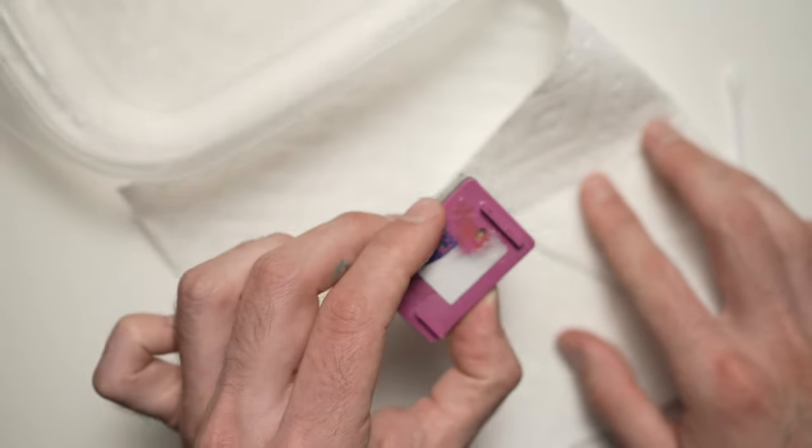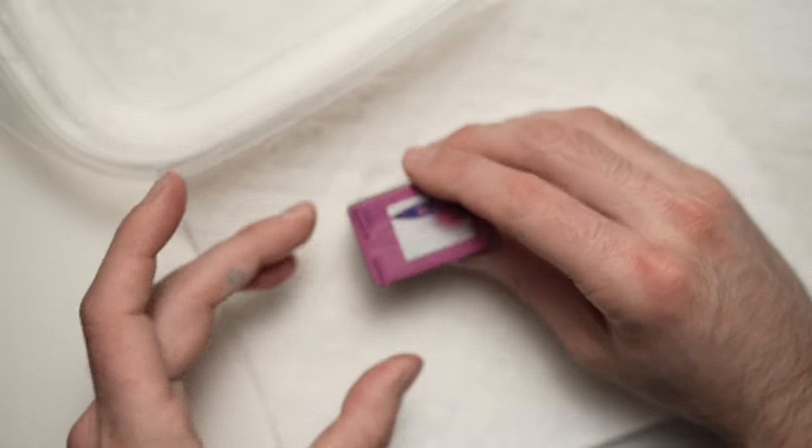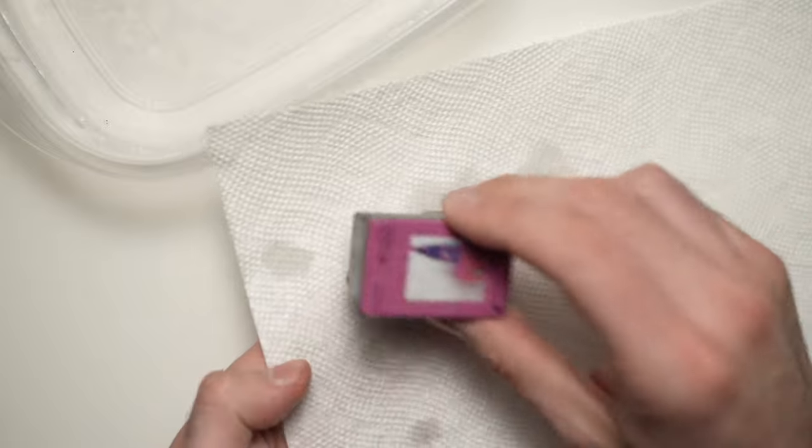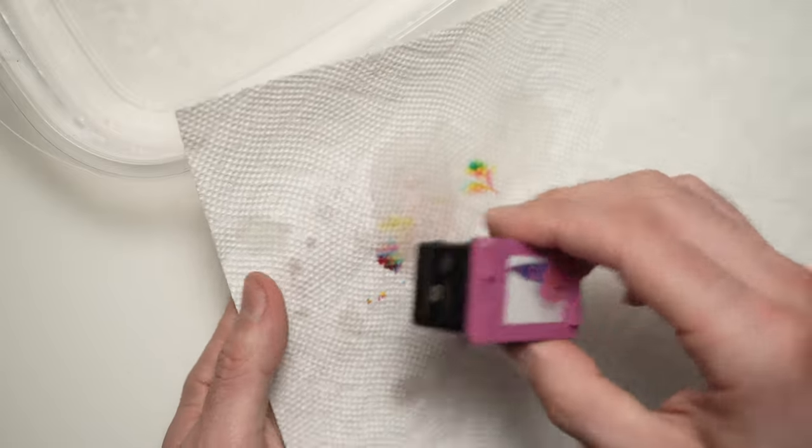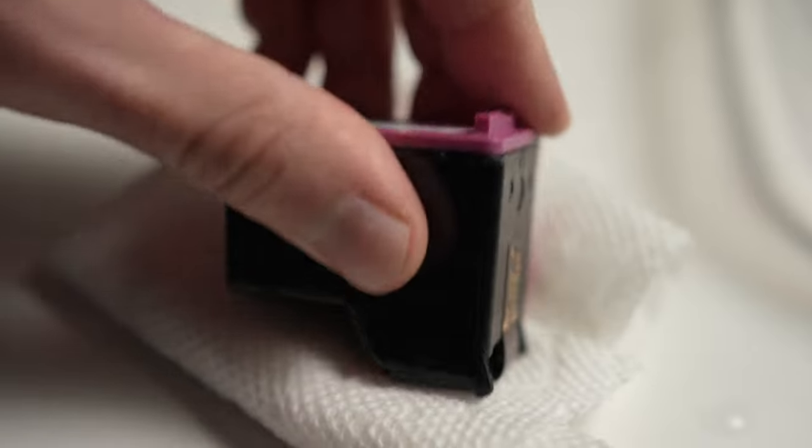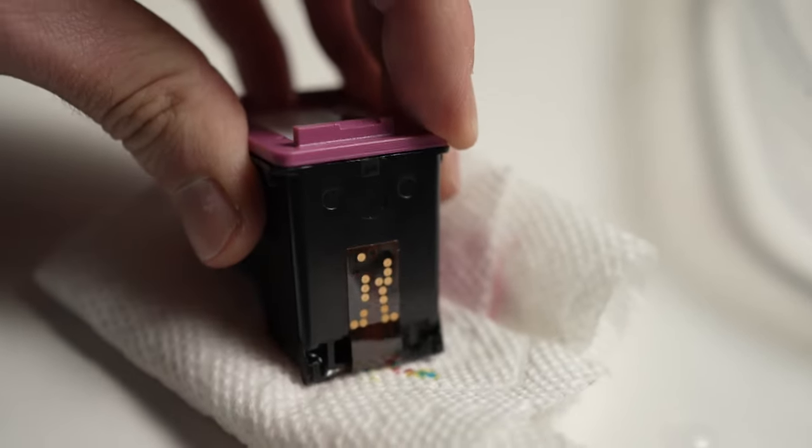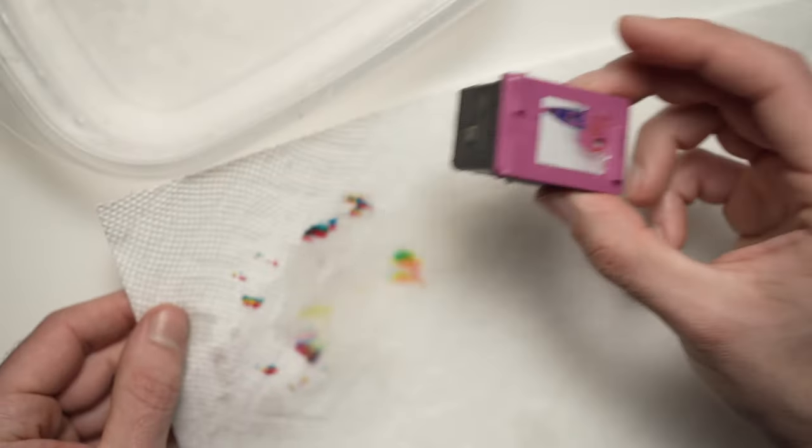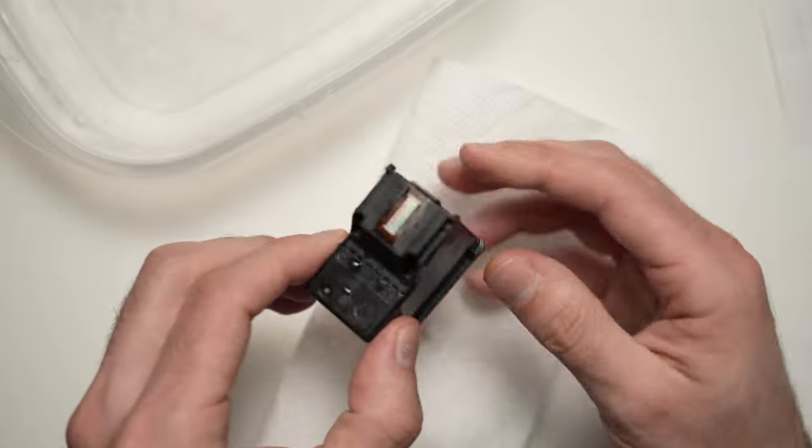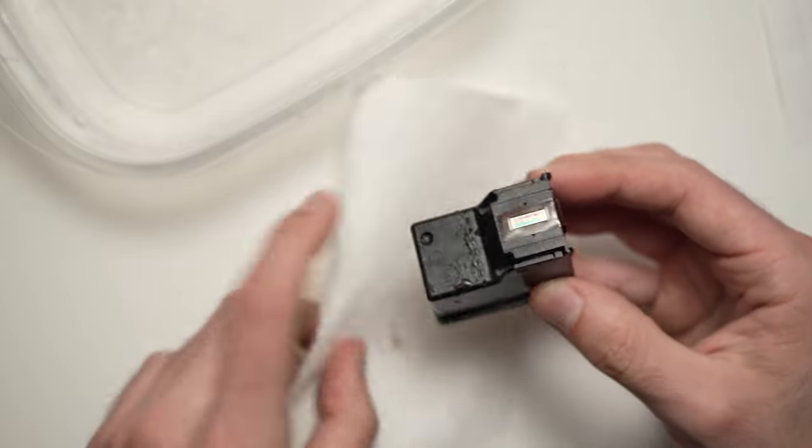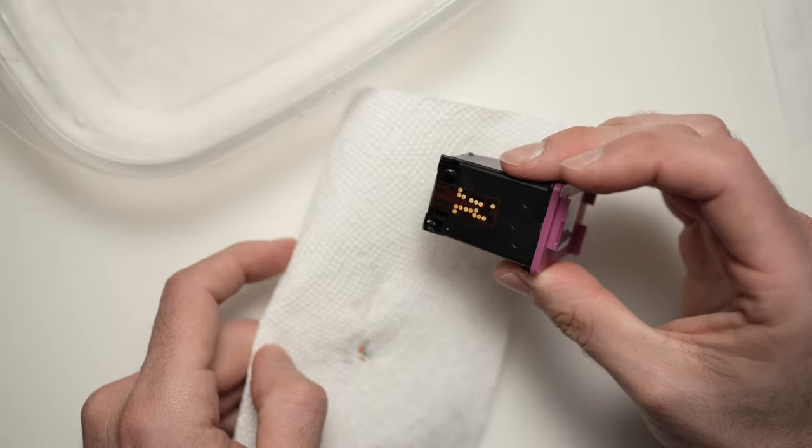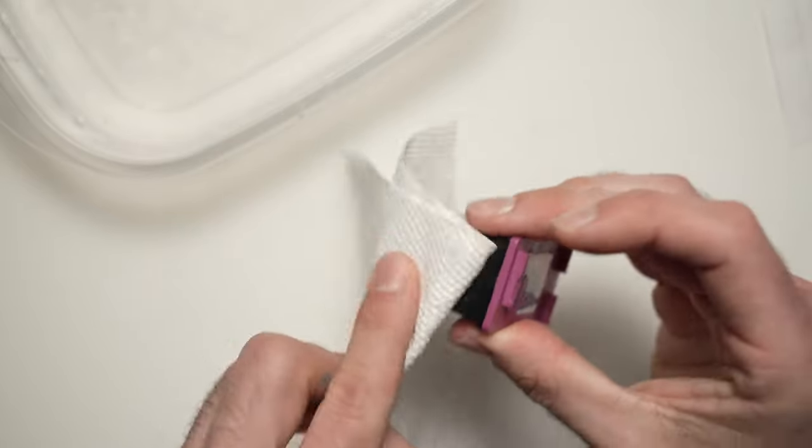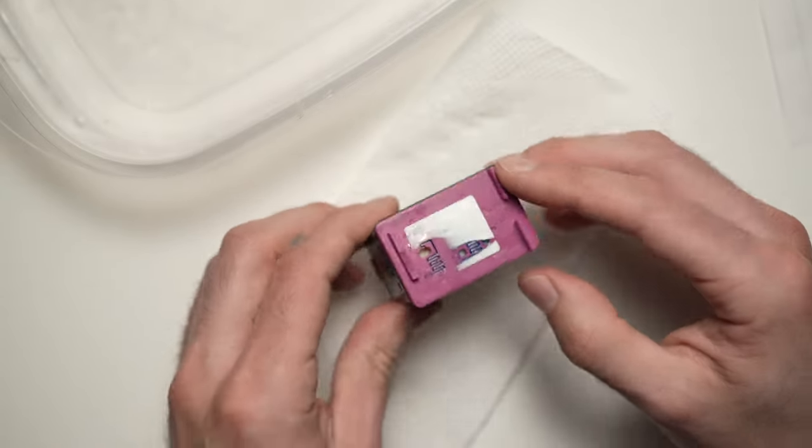Once you're done, take it out. Take your paper towel and dab it - by dabbing, I mean pressing the cartridge on the paper to dry it. It's normal that the color will leak. After dabbing it 10 to 20 times, you should be fine. Just make sure everything is dried. Dry everything, including the contacts. They should not have water on them.